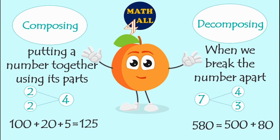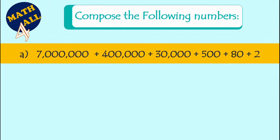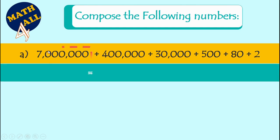And decomposing means break apart. Now let's practice more on this lesson. Here we go — compose the following numbers. Example A: seven millions plus four hundred thousand plus thirty thousand plus five hundred plus eighty plus two. At first, to compose a number, you need to know what is the greatest value. Here we go.